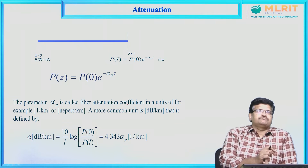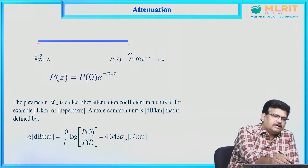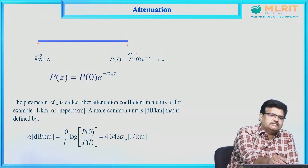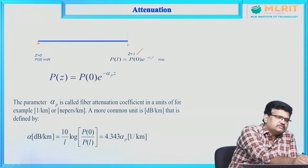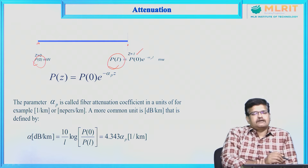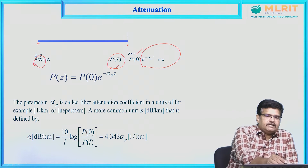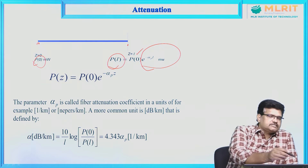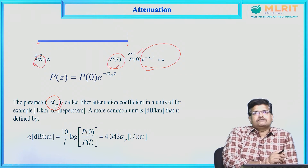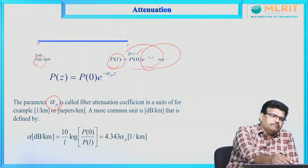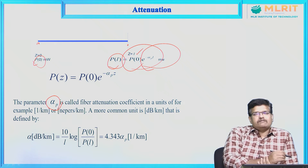Now if we see attenuation, let us consider the initial distance zero and the final distance L. Here P(0) is the initial power and P(L) is the final power. The attenuation coefficient alpha P is multiplied with the incoming signal exponentially, and finally our overall signal quality will be degraded.